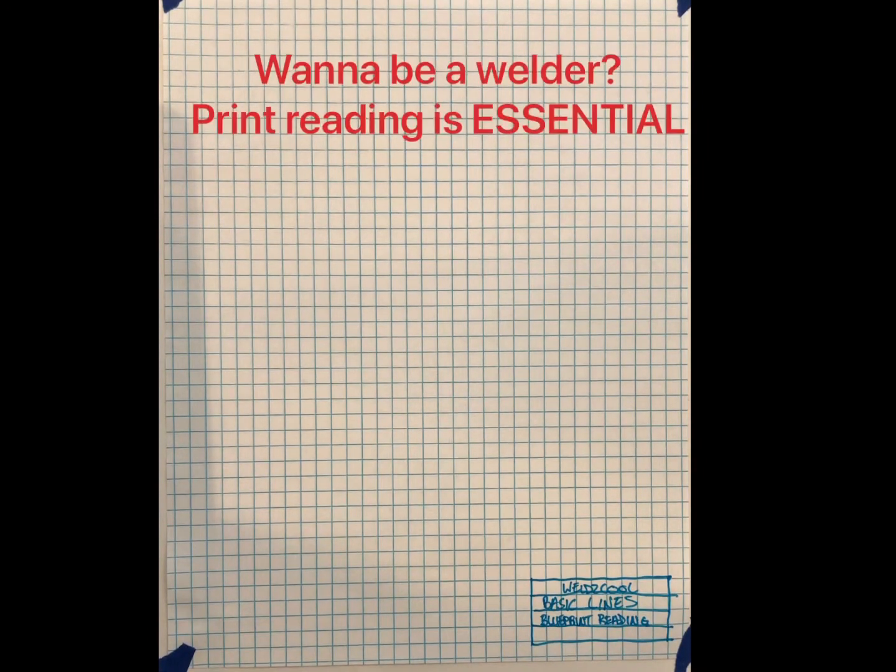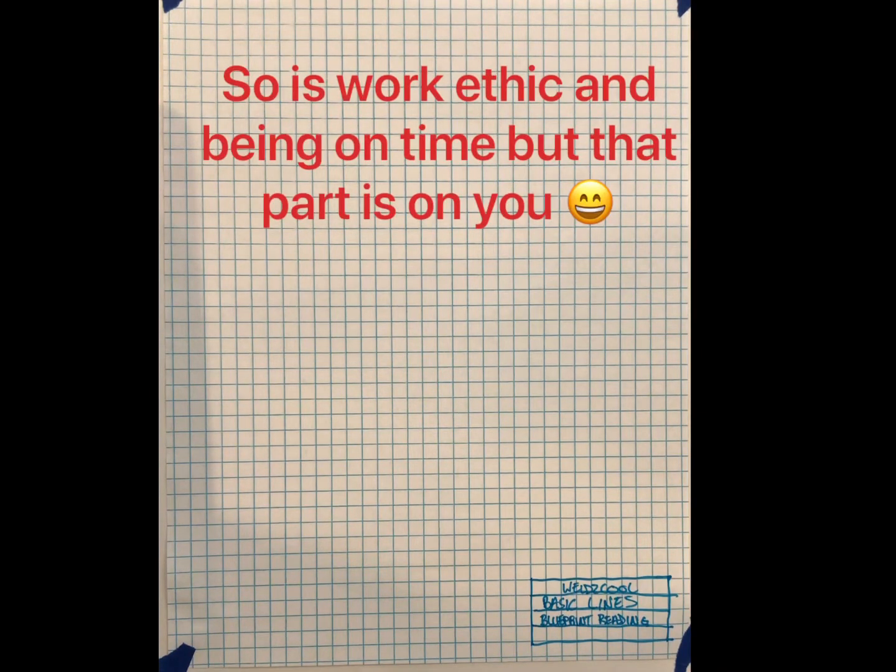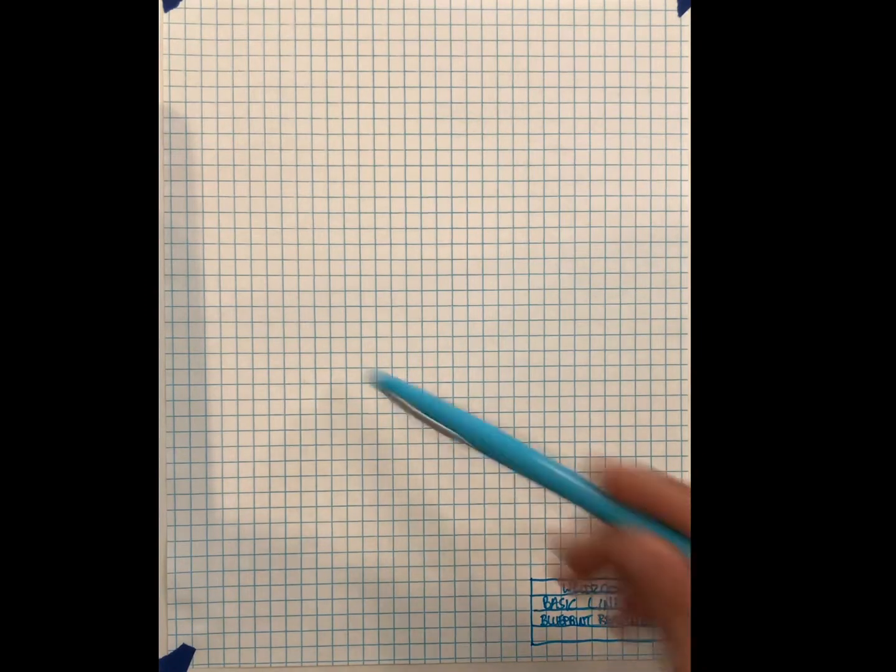Welcome to Weld School. This is a short video on basic lines for blueprint reading. When we start to look at these lines, we need to understand what they all mean and how they affect the way that we read a blueprint. Each line has a separate meaning and all lines will determine basically two things: the shape of an object and the dimensioning, so we need to know the sizes of an actual part.